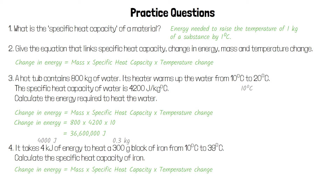We also need to calculate the temperature change. An increase from 10 degrees to 39 degrees is a temperature change of 29 degrees. So change in energy, which is 4,000, is equal to 0.3 times specific heat capacity, which we're trying to find out, times our temperature change of 29 degrees.